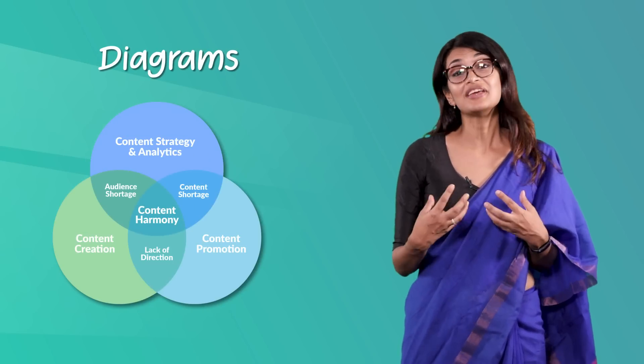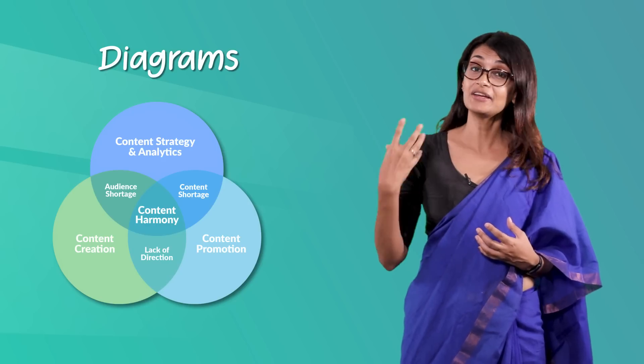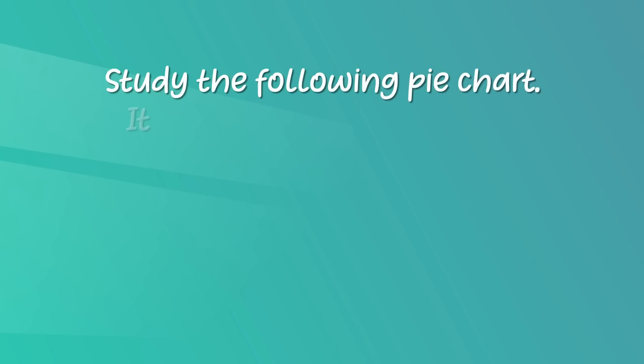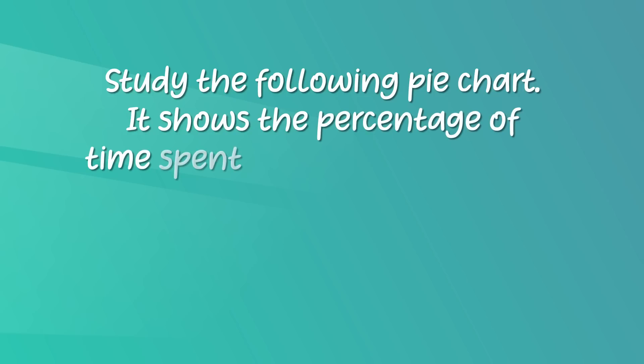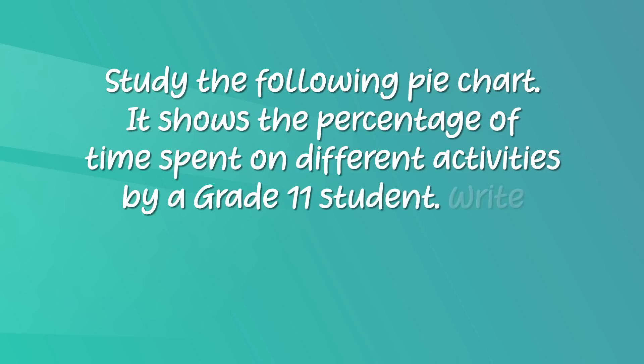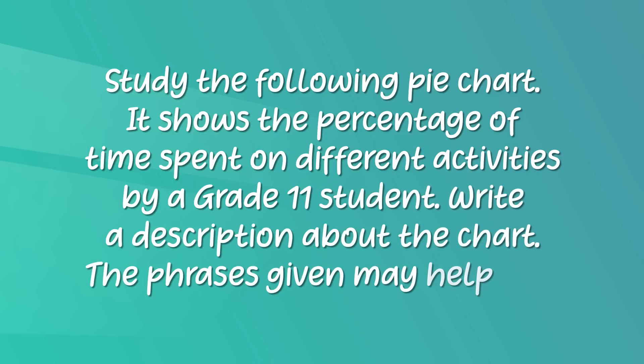Remember, each segment of the pie is a particular category within the total data set and represents a percentage. A diagram is a plan, drawing, or outline created to illustrate how separate parts work and overlap at the connecting points. Now let's look at Unit 5 of your pupil's book, page 56, activity 10. The activity asks you to study a pie chart showing the percentage of time spent on different activities by a Grade 11 student, then write a description using the given phrases.